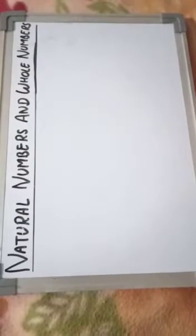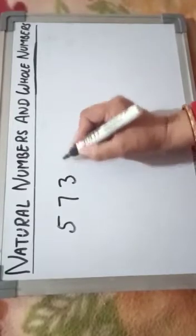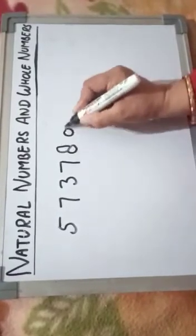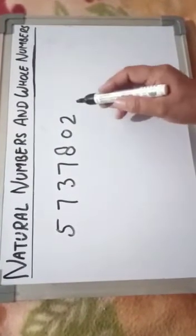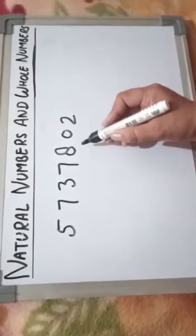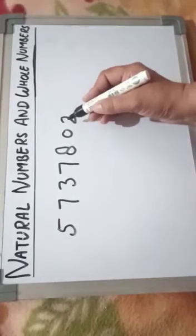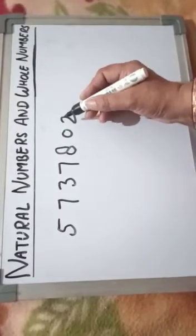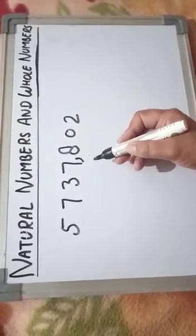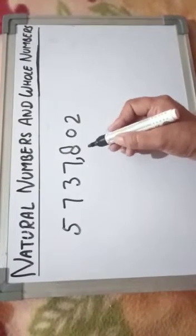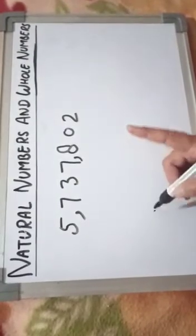I am taking a 7-digit number. In this system, a number is split into periods. In each period, there are 3 digits. The first comma is placed after the hundreds place, and then other commas are placed after every 3 digits. Now, we will write its number name.